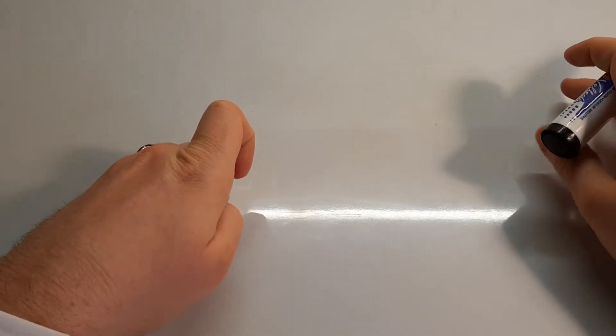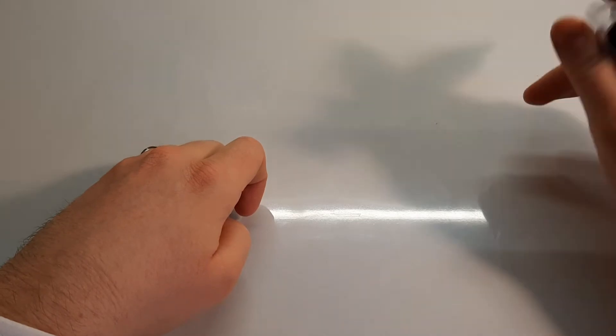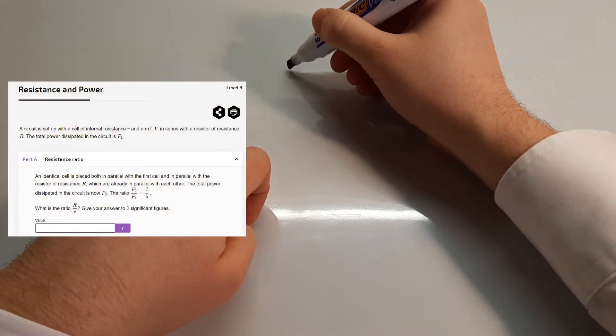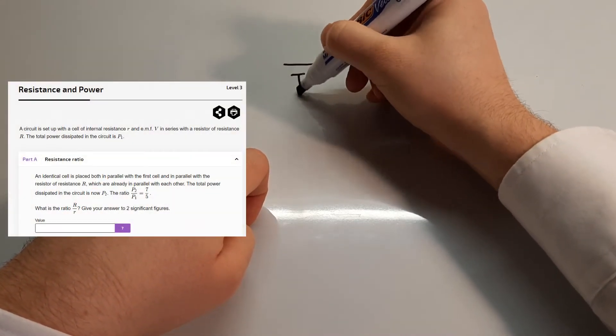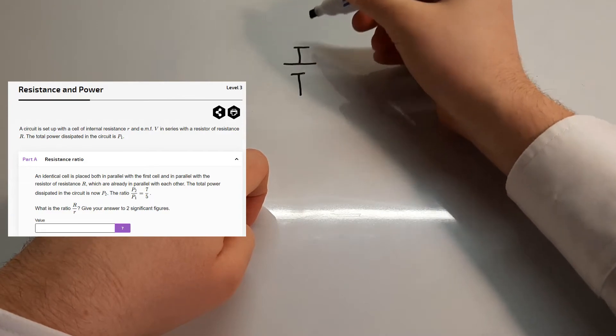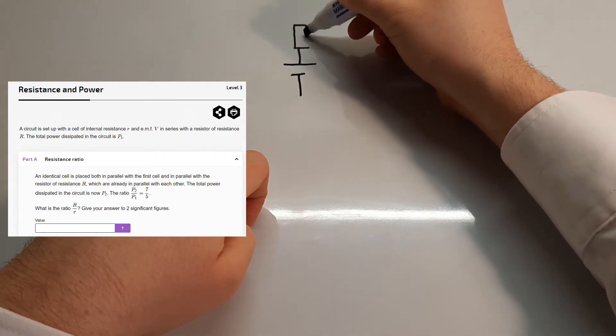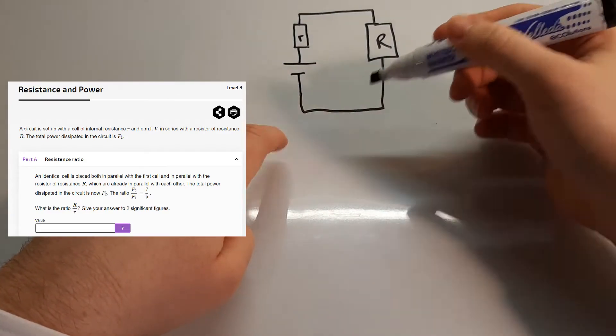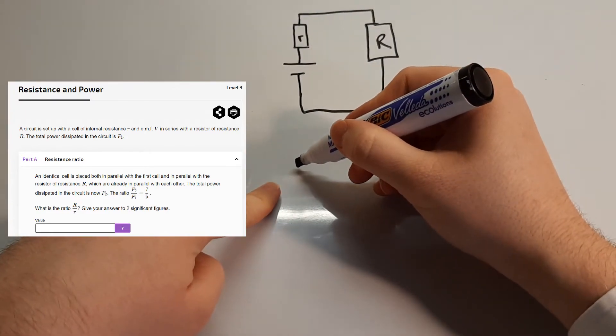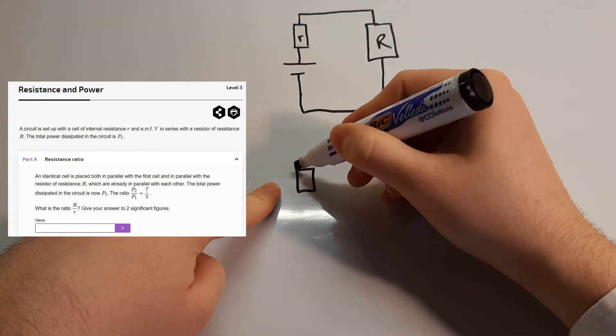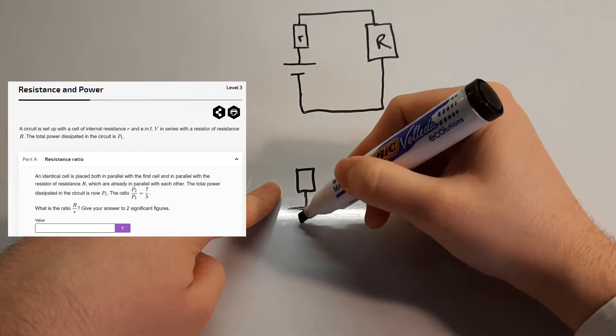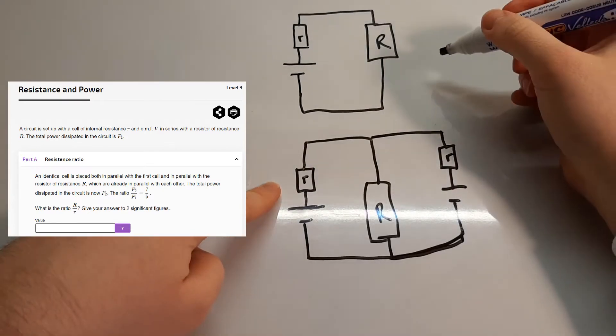Okay, basically we have a system which looks like this. We've got like a cell, and it's going to have an internal resistance up here. Fairly straightforward. And then what they do is they add another cell. So like this.